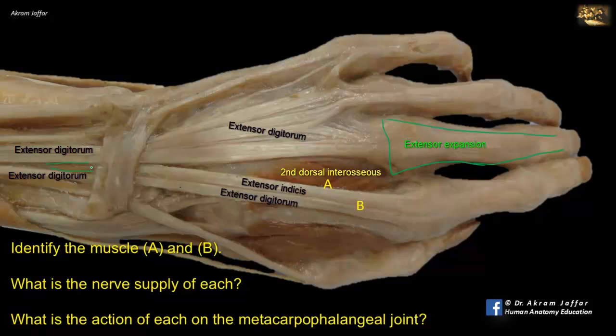Both the tendons of extensor indicis and extensor digitorum extend the metacarpophalangeal joint of the index finger, and then they form the extensor expansion like in the other medial forefingers. Being extensor muscles, extensor indicis and extensor digitorum are supplied in the forearm by the posterior interosseous nerve, a branch of the radial nerve — the nerve of the extensor compartments of the arm and forearm — being derived from posterior divisions of the brachial plexus.